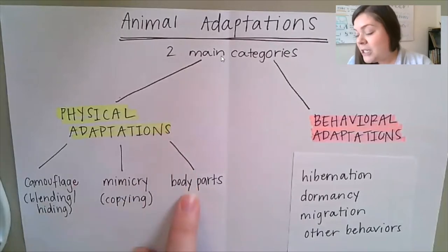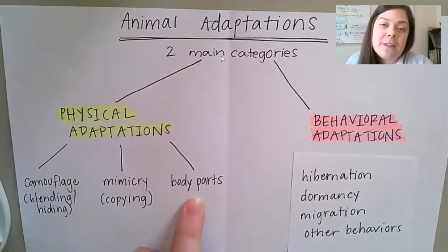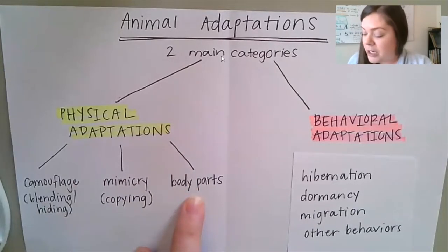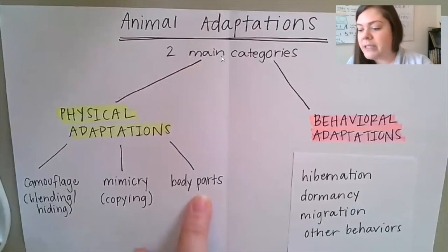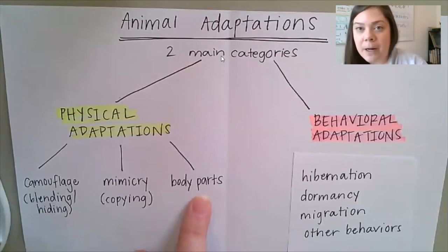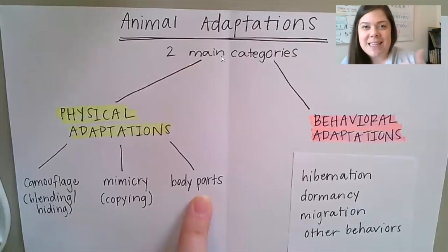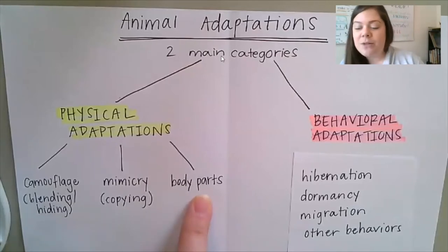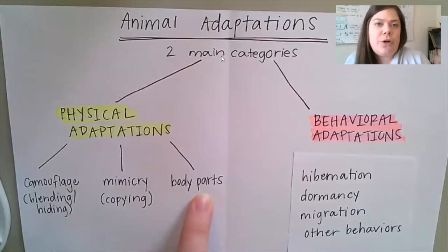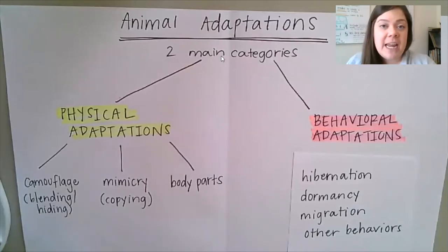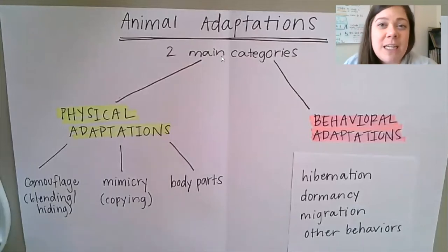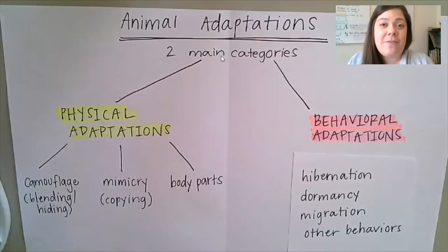We also talked about a larger category of physical adaptation which we just generally labeled different body parts. We know that those could be things like claws, whiskers, teeth, beaks, wings, hooves, maybe even fur or scales. Each one of those physical characteristics about an animal is going to help it survive and find those basic needs.